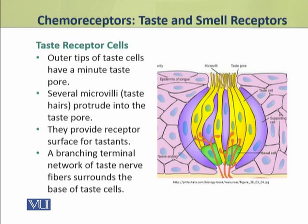We shall now see the structure of taste receptor cells. The outer surface of taste receptor cells has a minute pore called the taste pore. Out of this taste pore, several microvilli protrude out. These microvilli provide a surface for taste molecules.